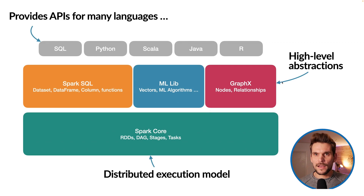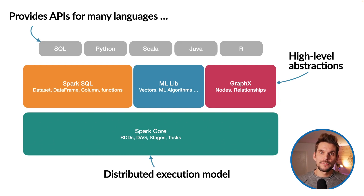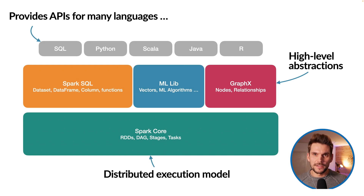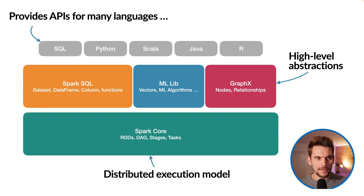In between, they have also implemented many high-level abstractions. On the left side, we have Spark SQL, which is the most commonly used component of Spark. This component provides us with a high-level declarative SQL-like API, so we can write user programs using SQL-like transformations. On the other hand, we have MLlib, which provides machine learning algorithms, and GraphX, which we can use for graph-like data.